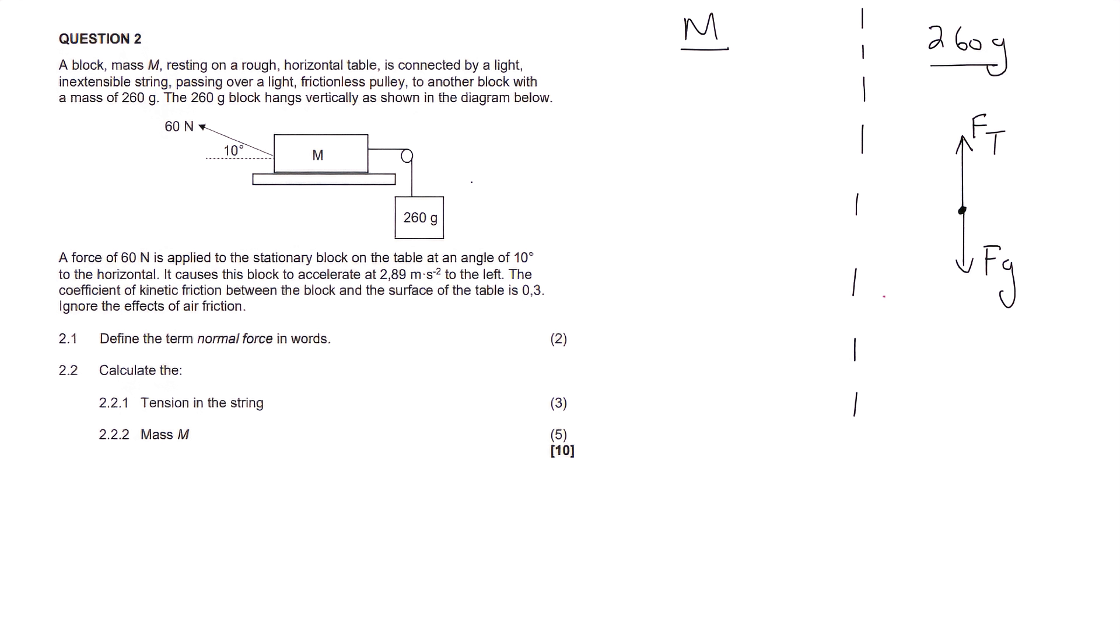Now let's do a free body diagram on M. So M has got some friction. They did tell us that. They said that there was a coefficient. Then there's also the tension force that's trying to slow it down. So we can just draw another little, just make a nice big dot. So that's your tension force over there. Then there's gravity. There's the normal force. And there's an applied force, which is at an angle.